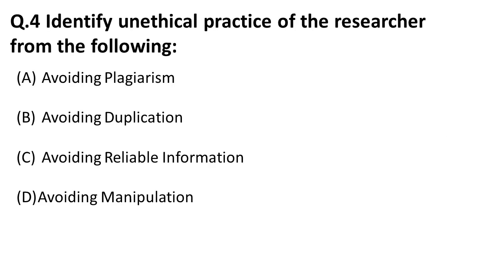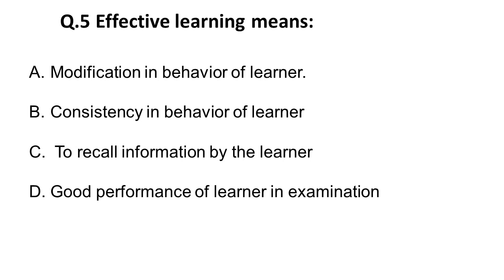The next question is: identify the unethical practice of researchers from the following. This is from research aptitude. Options: A) avoiding plagiarism — this is an ethical practice; B) avoiding duplication — also ethical; C) avoiding manipulation — also ethical. The correct answer is D: avoiding reliable information, which is an unethical practice.